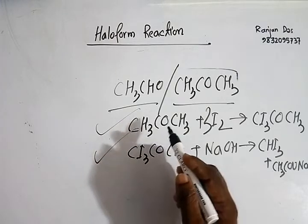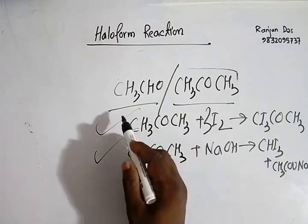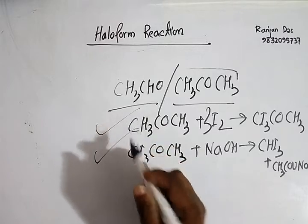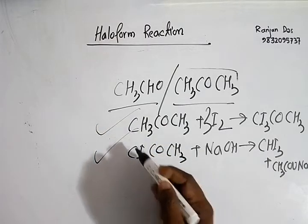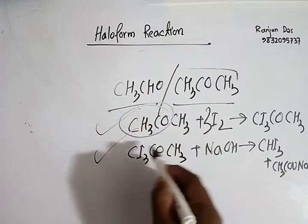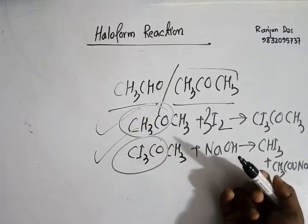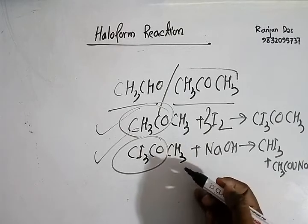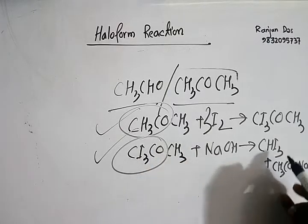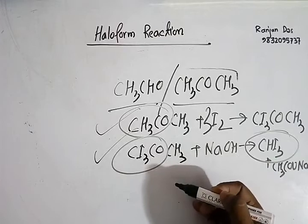So the first step here is iodination and the second step is hydrolysis. In case of ethanol we have seen that there were three steps and the first step was oxidation, but here as ketomethyl group is already there in the compound, the first step is not required. So that's how we can prepare iodoform by haloform reaction.